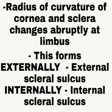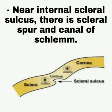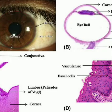This abrupt change in radius of curvature forms externally an external scleral sulcus, and internally an internal scleral sulcus. In the diagram, the red arrow labels the external scleral sulcus and the black arrow labels the internal scleral sulcus. Behind the internal scleral sulcus lies the scleral spur and the canal of Schlemm.